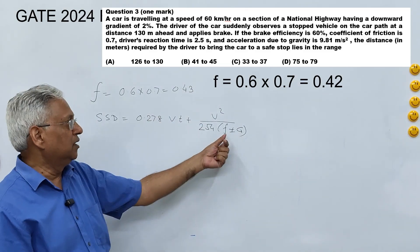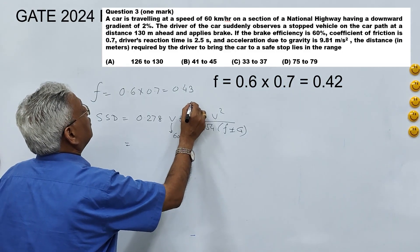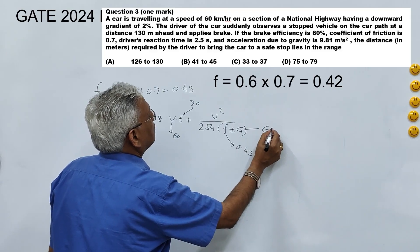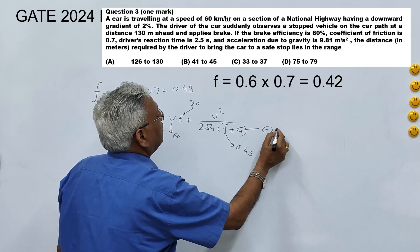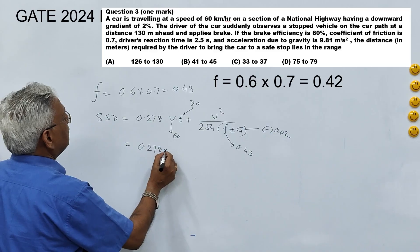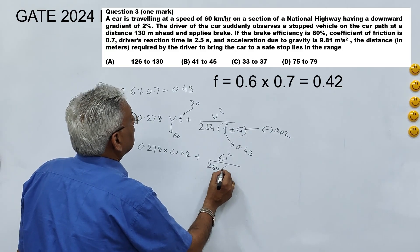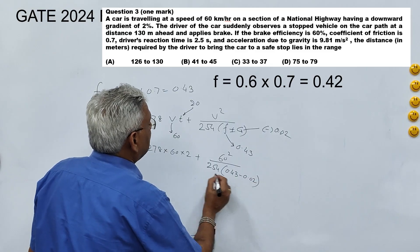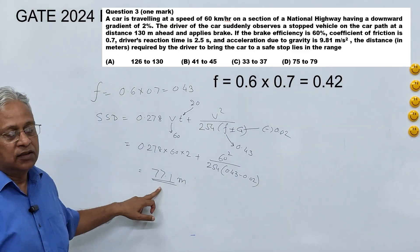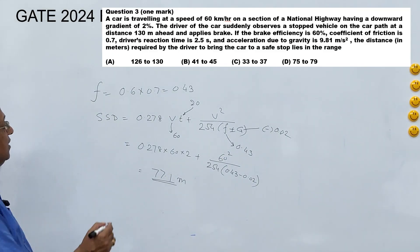G is a downgrade so it will be negative 2 percent (−0.02), V is 60 km/h, reaction time is 2.5 seconds, f = 0.43, and G = −0.02. Substituting all values: SSD = 0.278 × 60 × 2.5 + 60² / (254 × (0.43 − 0.02)) = 77.1 meters. Looking at the options, option D is 75 to 79 meters, and therefore option D is correct.